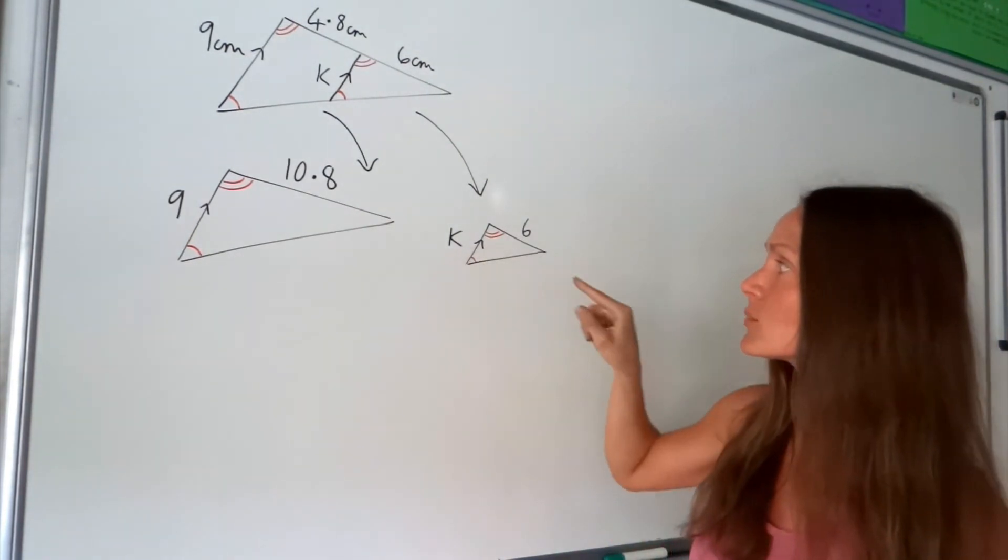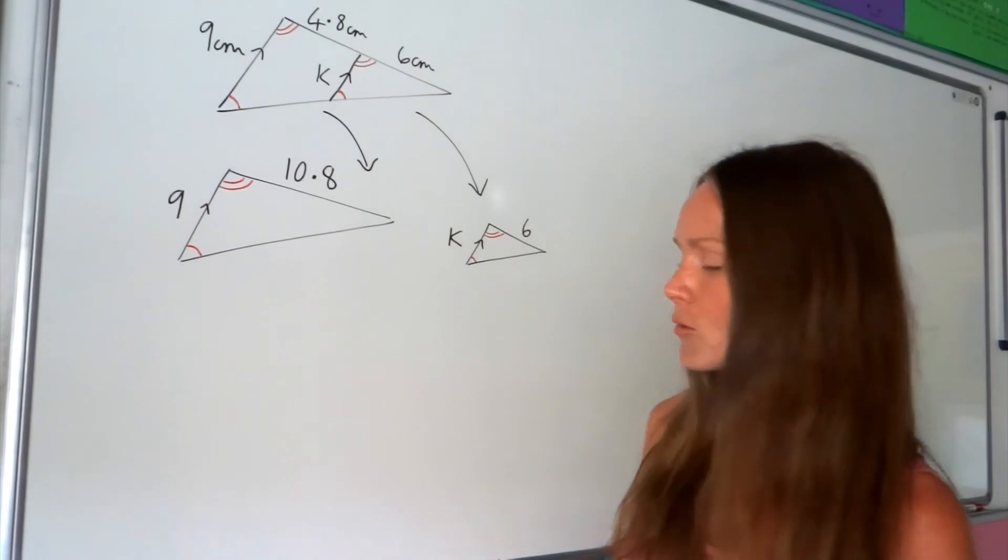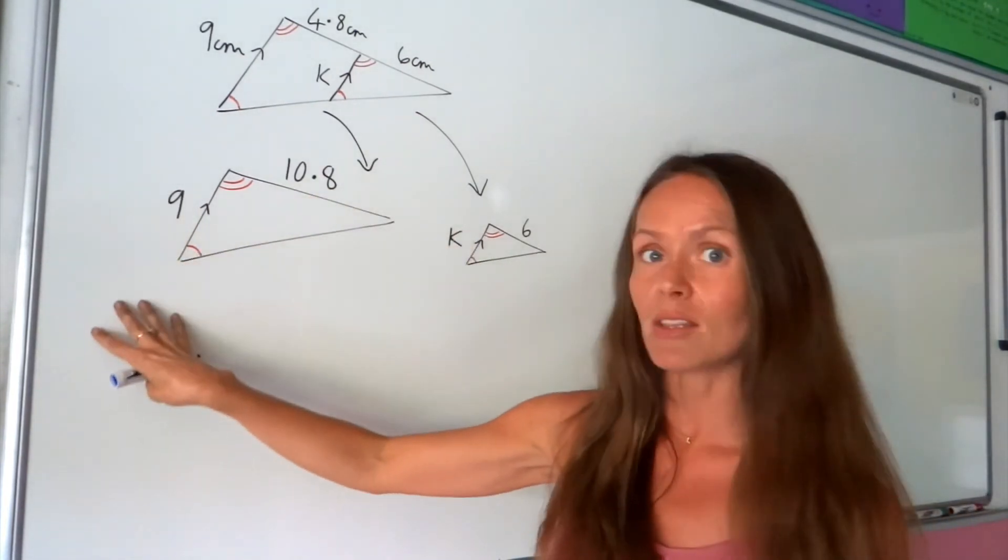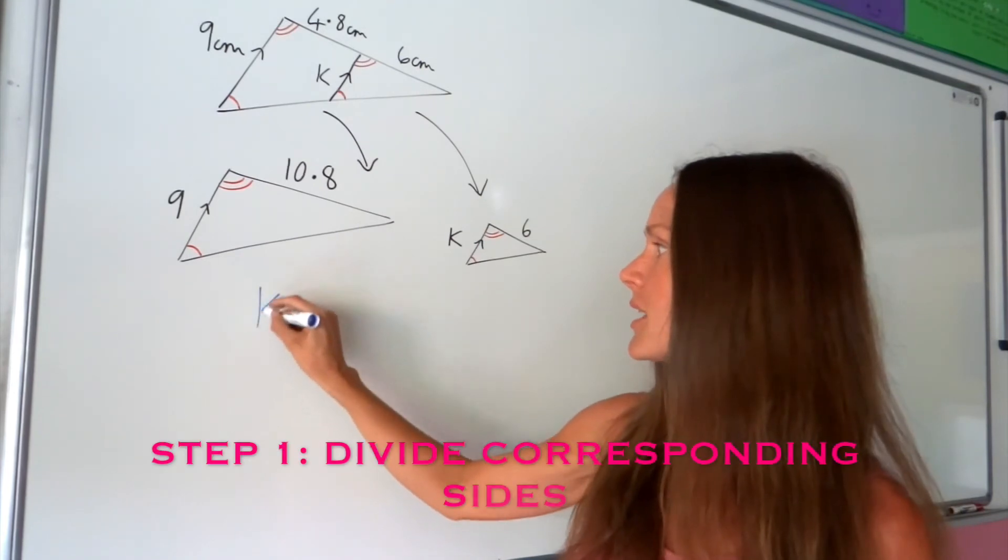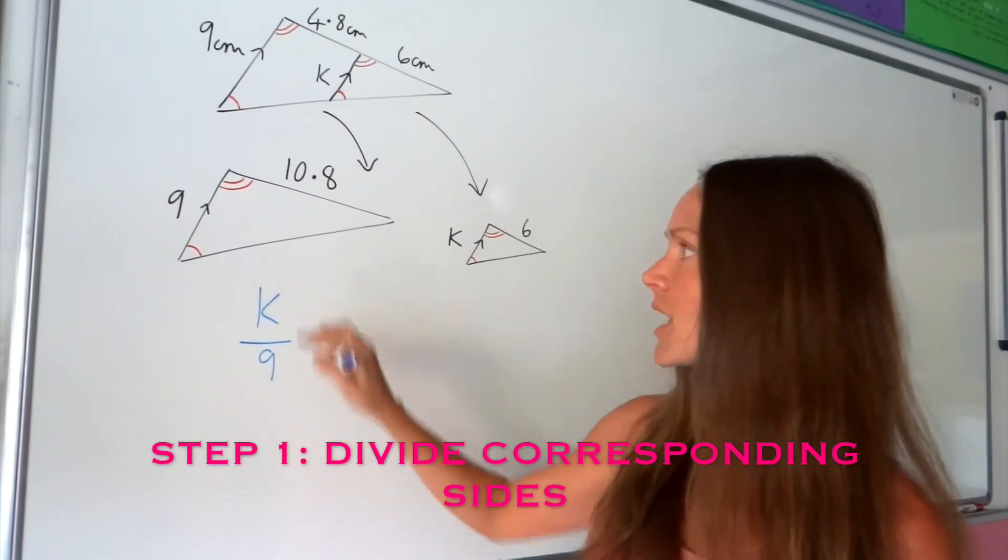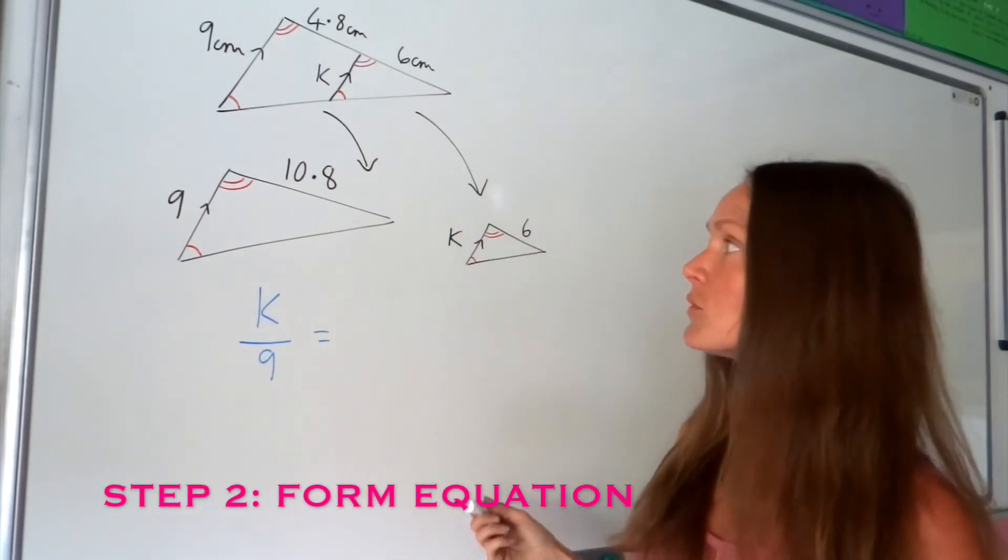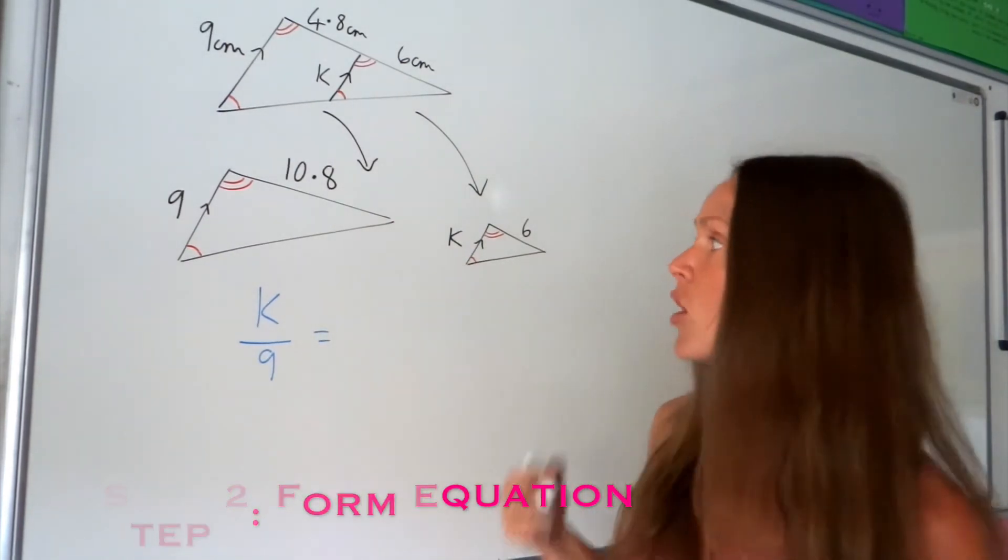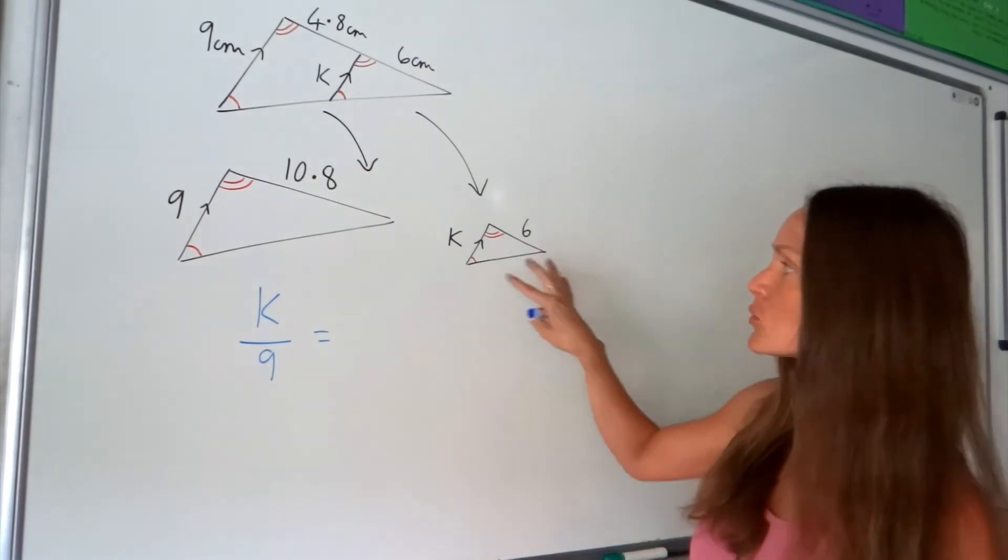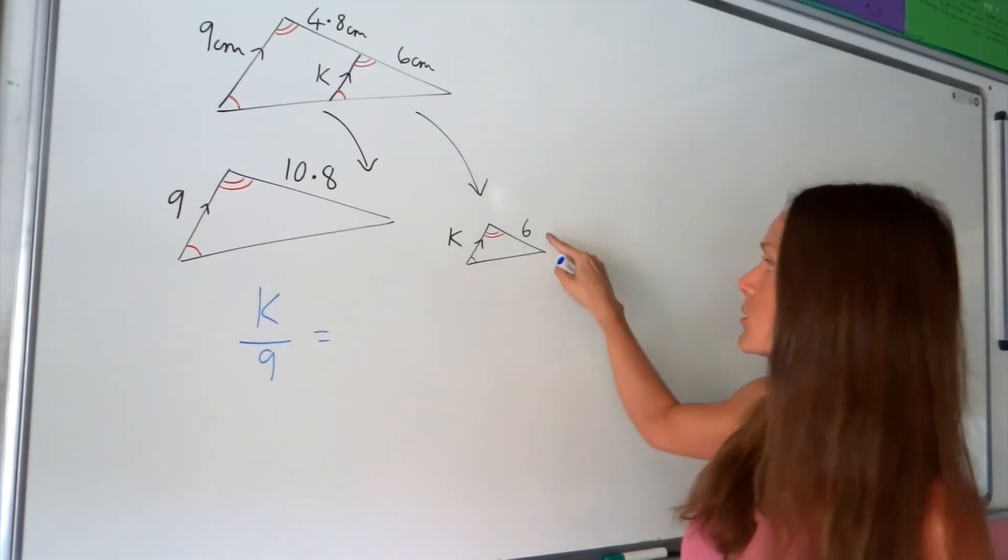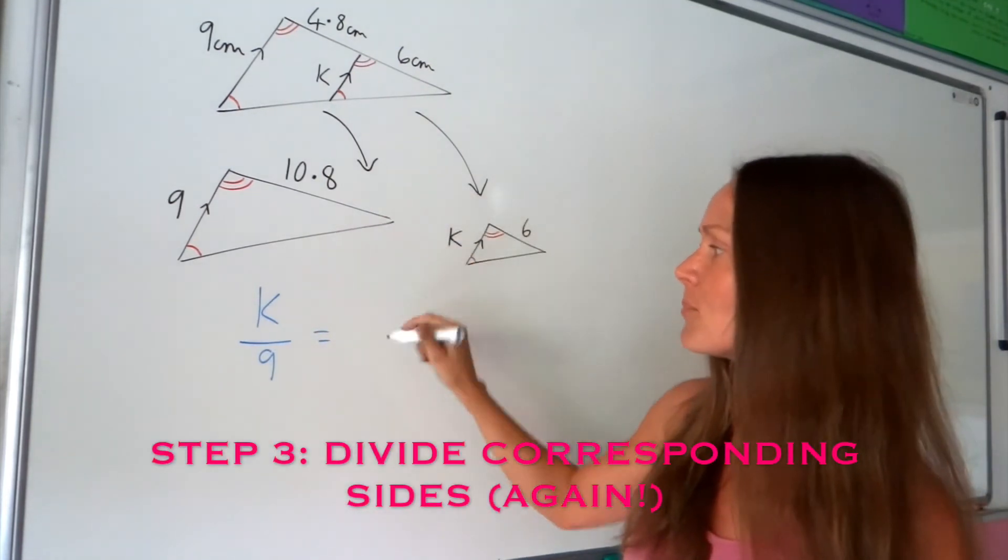So here's k. It's one of the sides on the smaller triangle. So this time we're doing the small side divided by the big side. So we're doing k divided by 9 because that side corresponds to k. Now we need to put that equal to the division of the other pair of sides. Not forgetting to put the smaller side as the numerator like I did here. So we're doing 6 divided by 10.8.